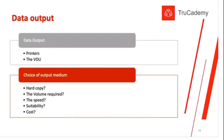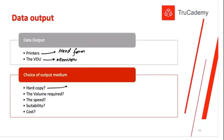Data output has two forms: a graphical one using monitors to display data, and a hard copy using a printer. Sometimes it's better to print out data and sometimes better to use soft form displayed on monitors. To decide which method to use, first ask: do we really need a hard copy? For some legal documents, a hard copy is mandatory as a soft copy may not be legally acceptable.